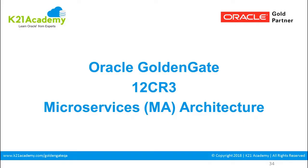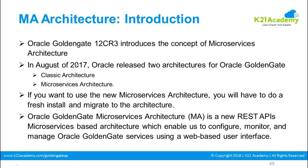Let us discuss the newly introduced microservices architecture in Oracle GoldenGate 12cR3. Oracle introduced microservices architecture in the 12cR3 version in August 2017, and it is becoming popular nowadays. In August 2017, Oracle released two architectures for Oracle GoldenGate: classic architecture, which is the existing one, and the newly introduced microservices architecture.